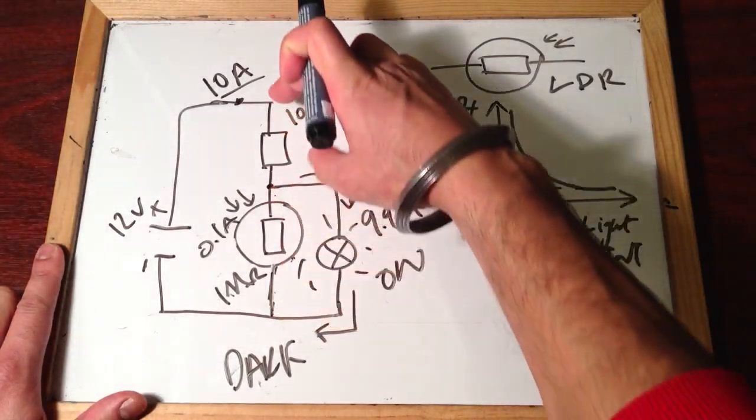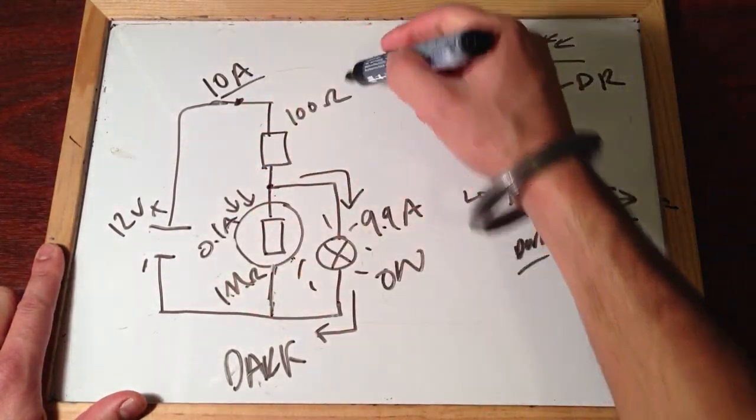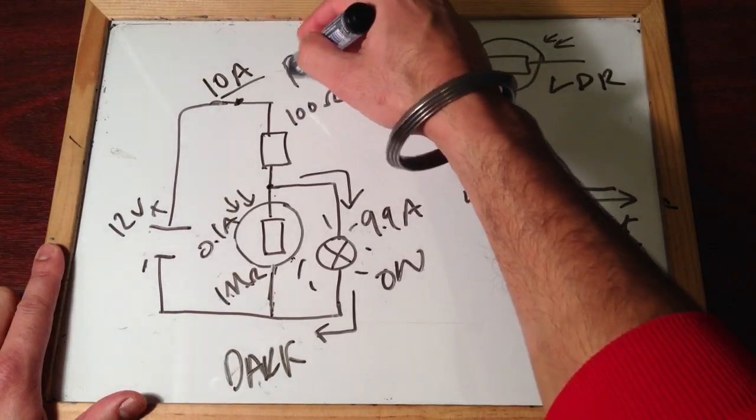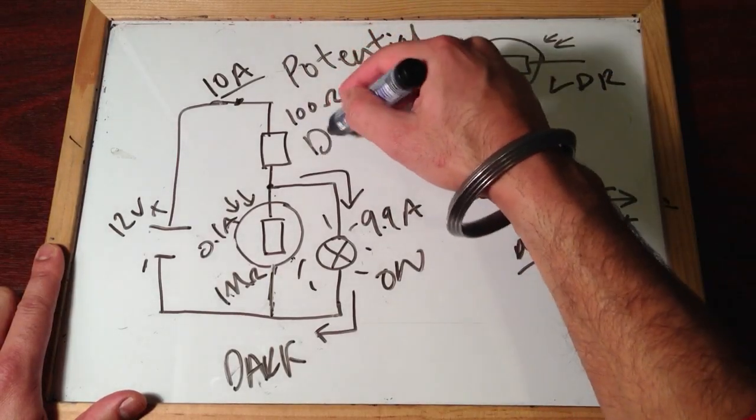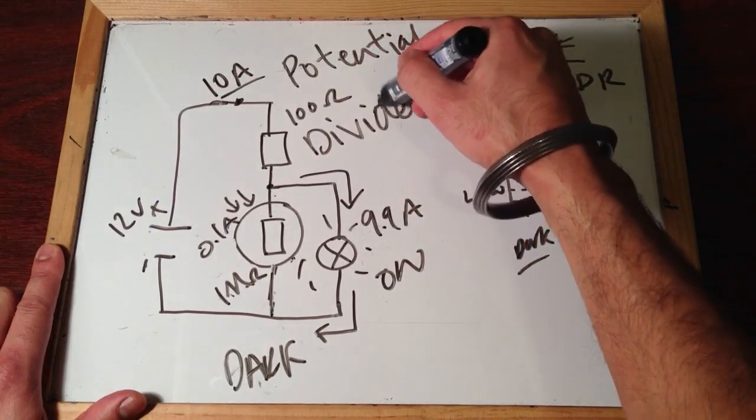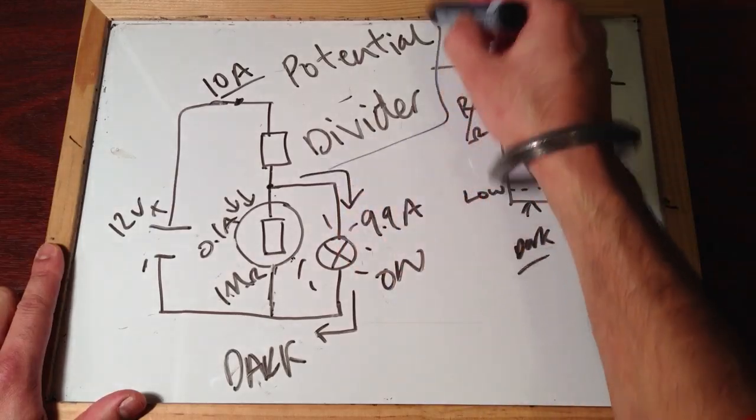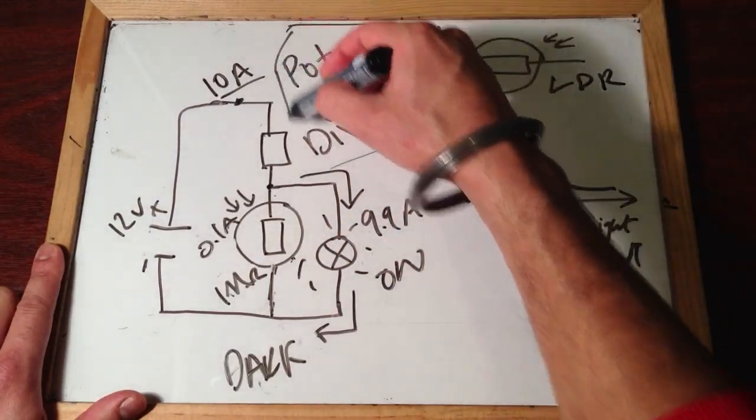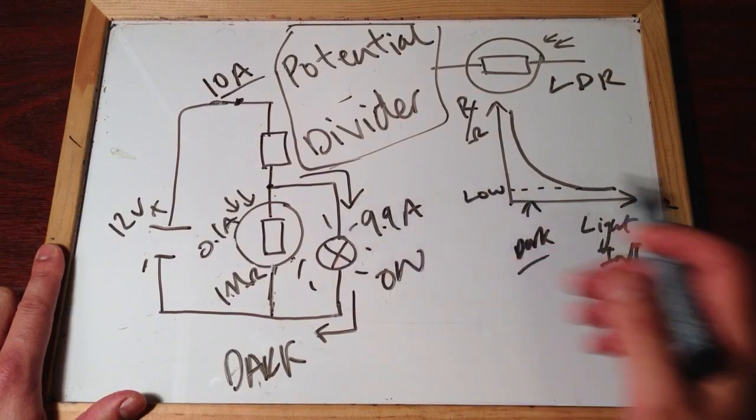So that's how we use an LDR, and this setup of one resistor and another resistor, this setup you see here, is called a potential divider. It's called a potential divider. We don't really need to know this particular setup until we're in A level, but this gives you an idea, because you're right.